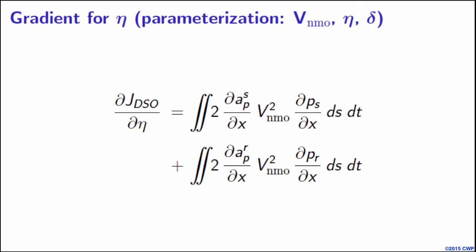Let's have a closer look at this equation. The gradient for eta depends on the background values of V_NMO and involves the first horizontal derivatives of the state and adjoint state variables. It has physical meaning: there is a trade-off between normal moveout velocity and eta in the horizontal direction for the given parameterization.